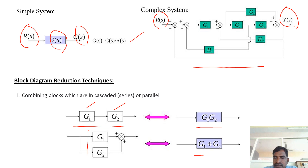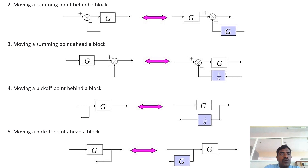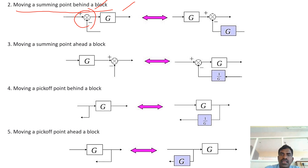Coming to the second step: moving a summing point behind a block. Here the summing point is before the block, and we need to move this summing point to after the block. At that time, we have to add this summing point as a G block. So finally we get G minus G, and the output is G.